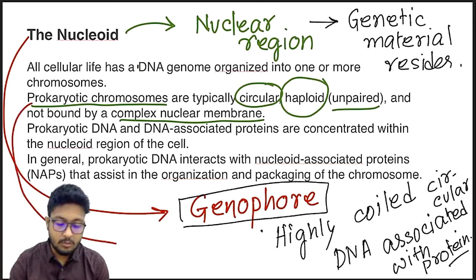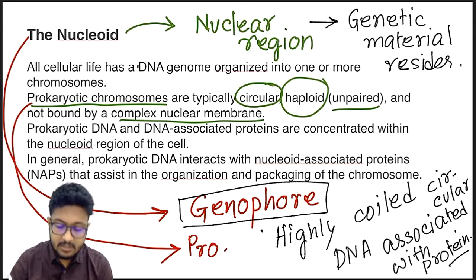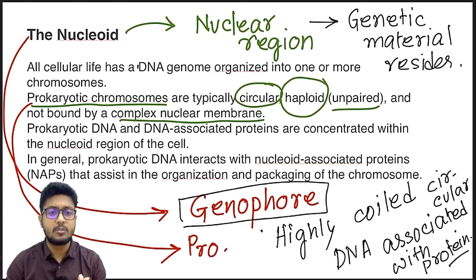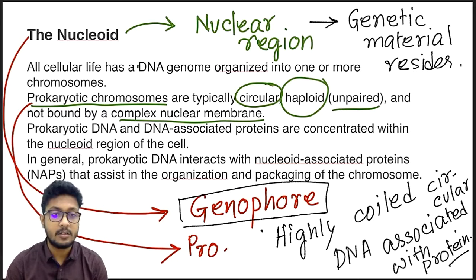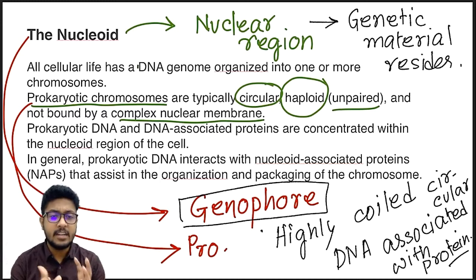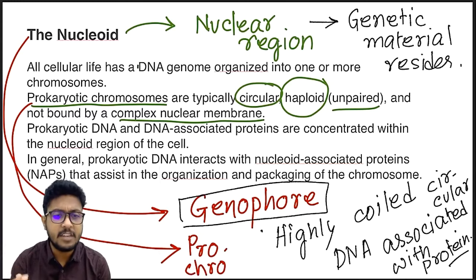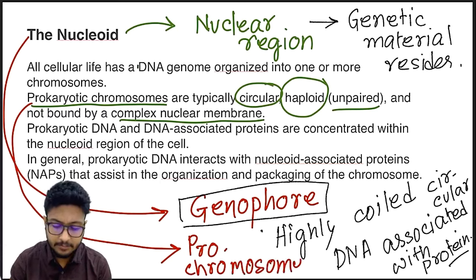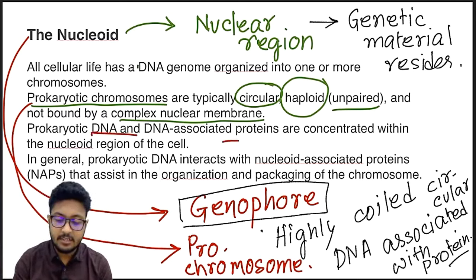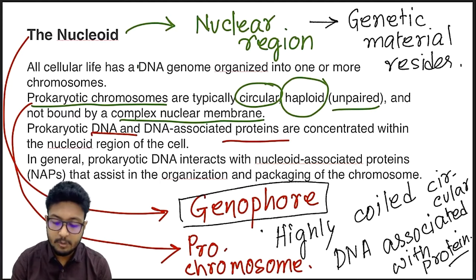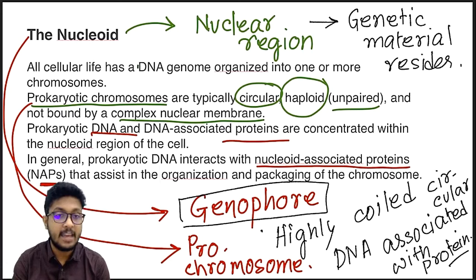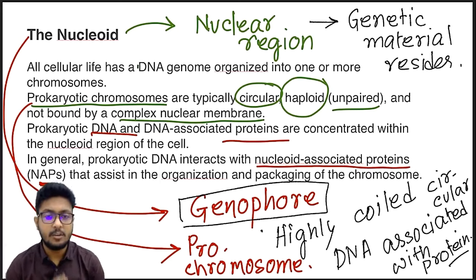The prokaryotic chromosome is also called a prochromosome because it does not have a specific chromosome structure. To form a proper chromosome, histone proteins are required. But in bacteria and prokaryotes there are no histone proteins, so the coiled structure formed by prokaryotic DNA is called a prochromosome. Instead, prokaryotic DNA is associated with nucleoid-associated proteins, or NAP.